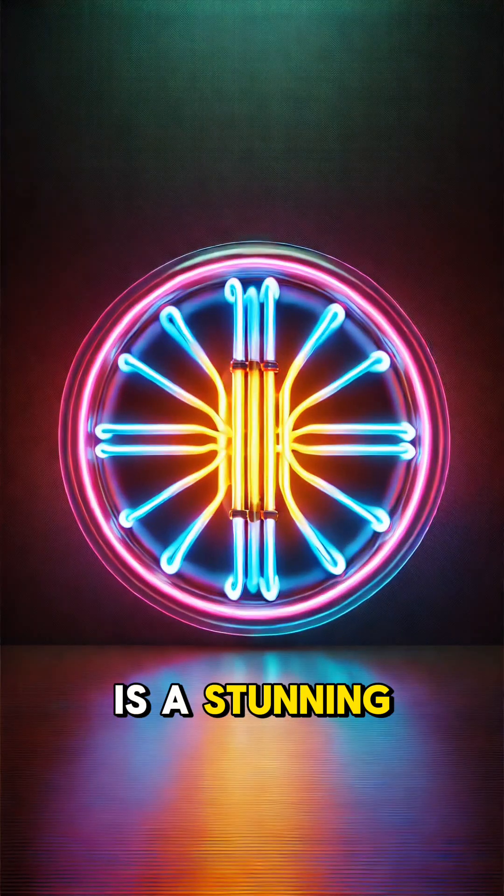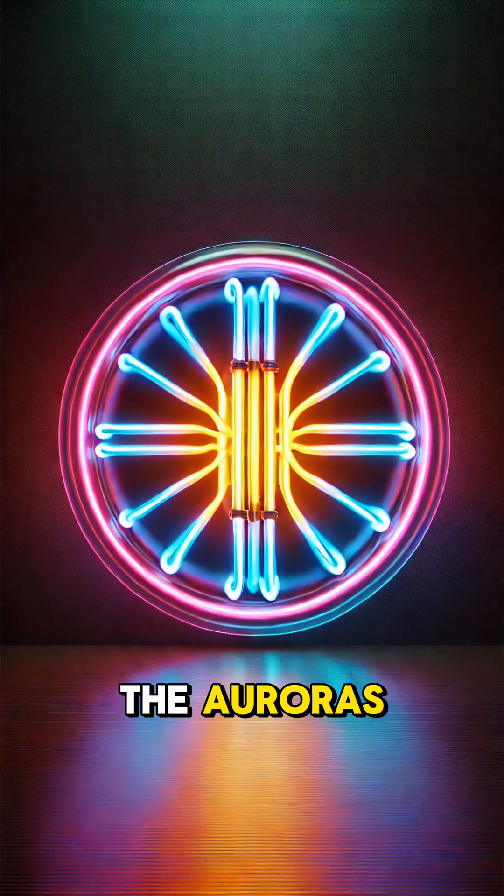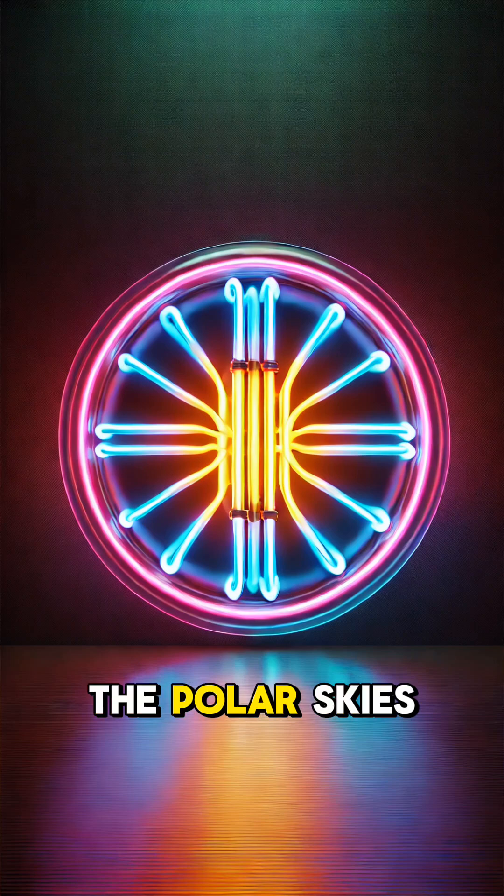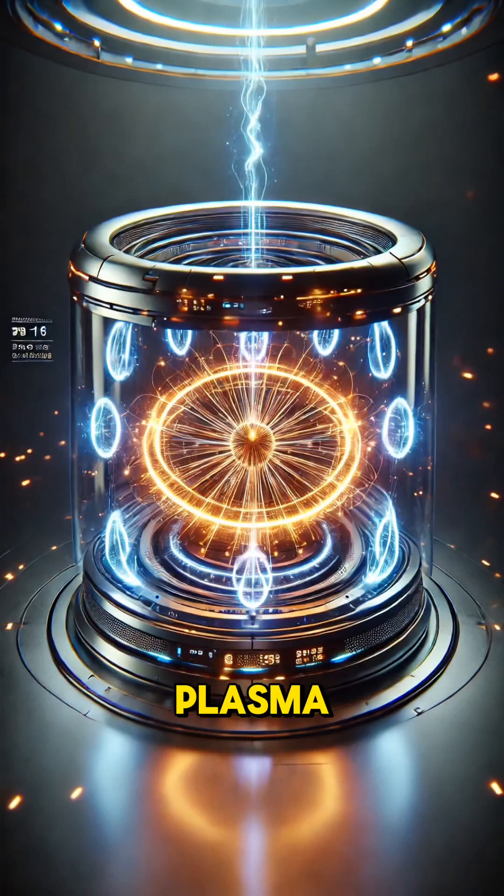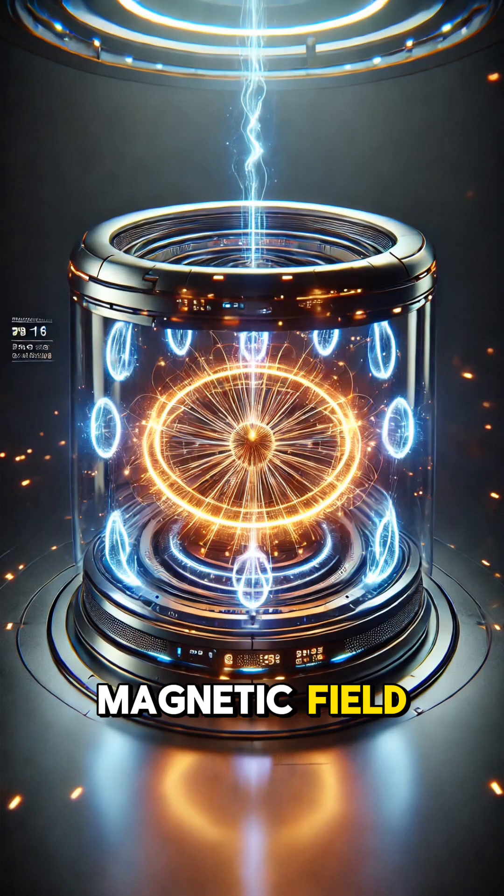Lightning is a stunning example of plasma on Earth. The auroras, those mesmerizing lights in the polar skies, are caused by plasma interactions with Earth's magnetic field.